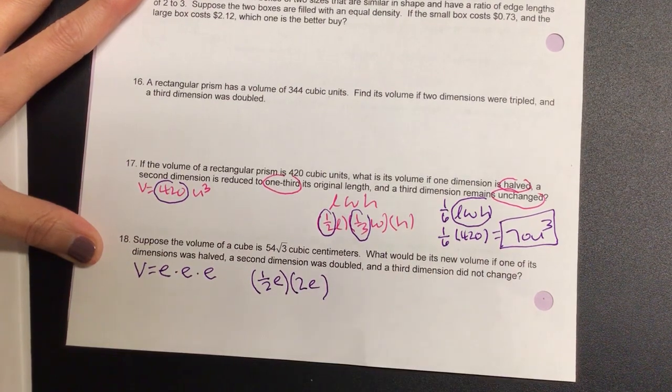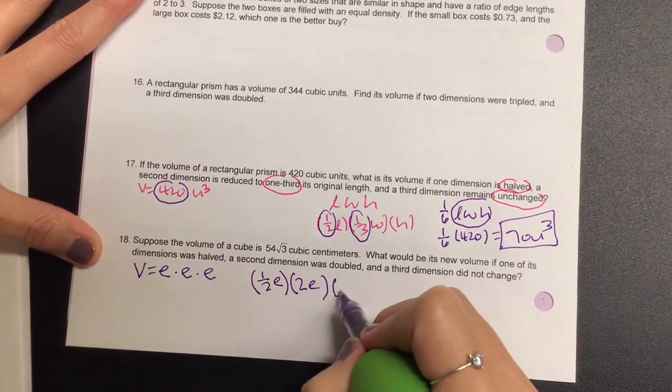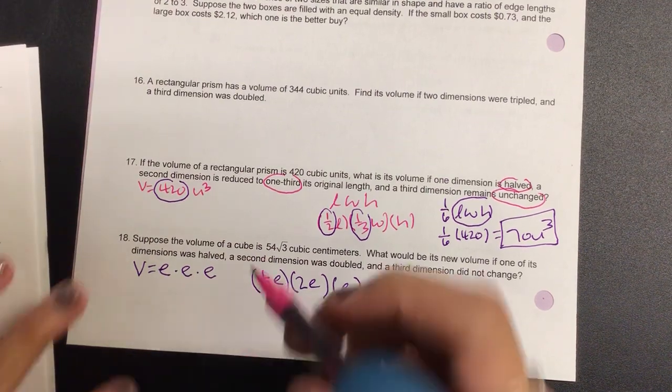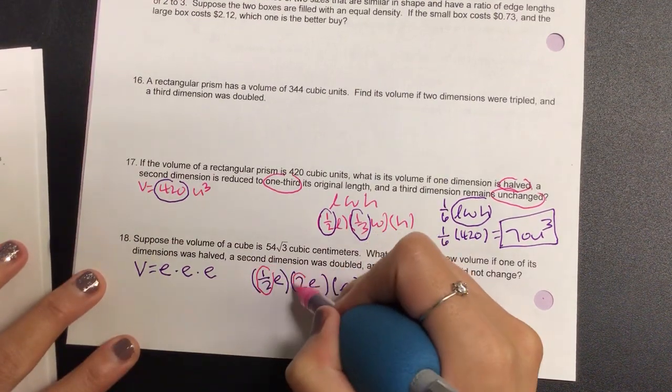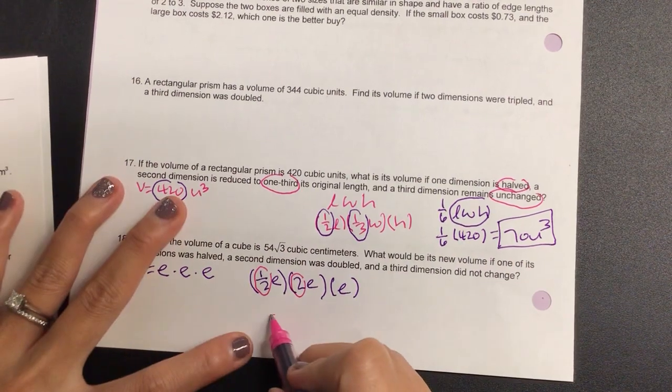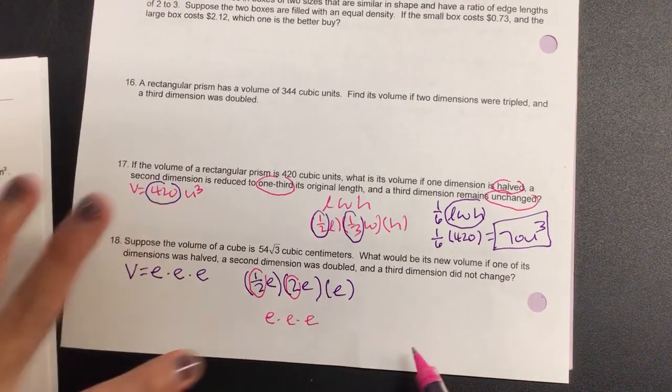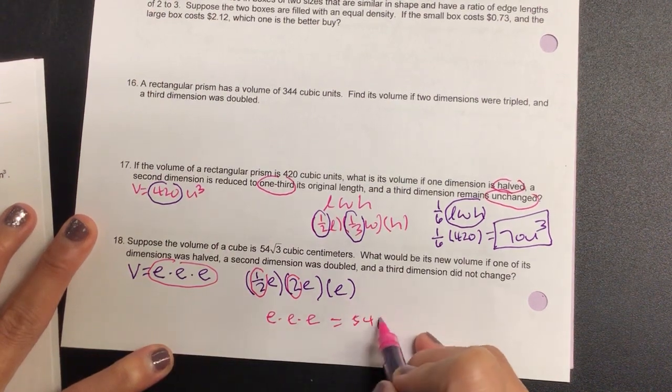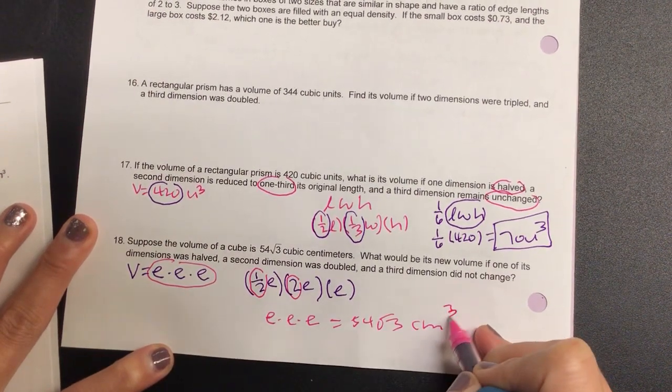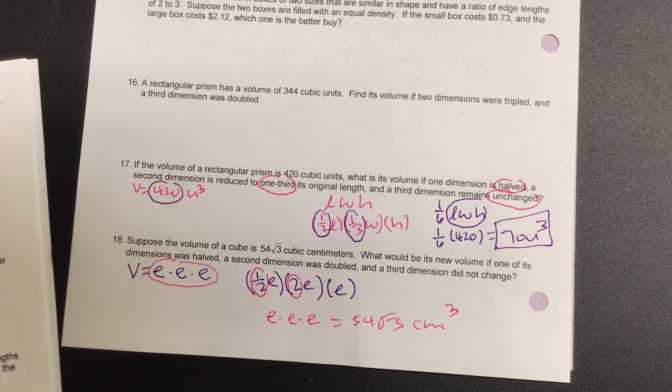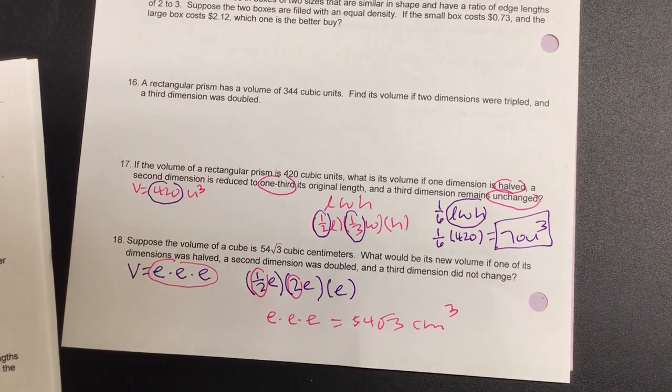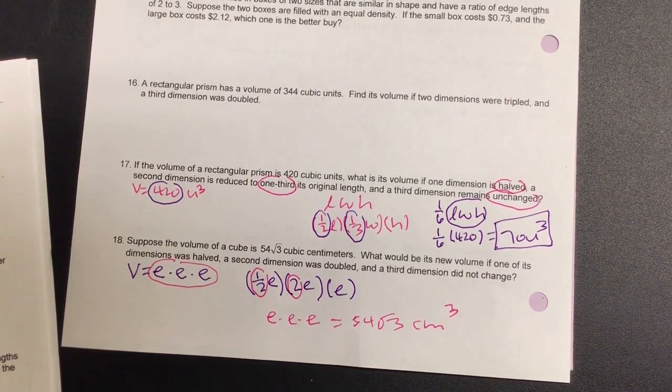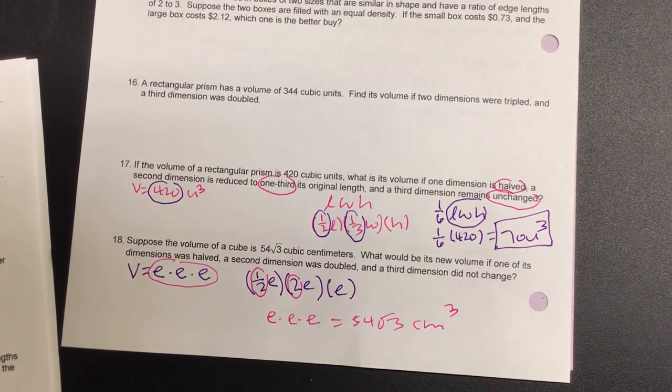If I were to do the exact same thing, what would happen to one-half and two? So I basically have e times e times e. Isn't that the original formula? So it is still 54 root 3 centimeters cubed, because when you have something and then double it, they cancel each other out. Okay, so do we have enough info to do number 16? Most likely.